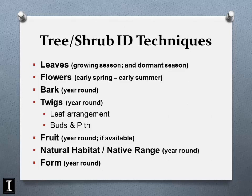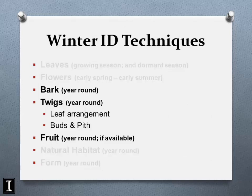I identify 95% of my trees by bark only, but I've been doing this a long time. Fruit is great for tree ID — an acorn tells you it's an oak — but young trees may not produce fruit yet, and gravity and wildlife move acorns, so the fruit on the ground may not be from the nearest tree. Form is another approach: white pine has a horizontal limb structure you can ID from its silhouette.